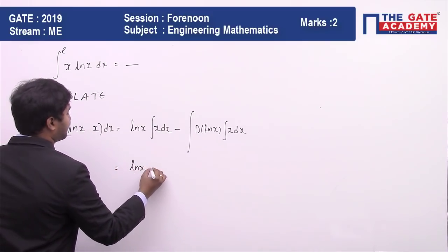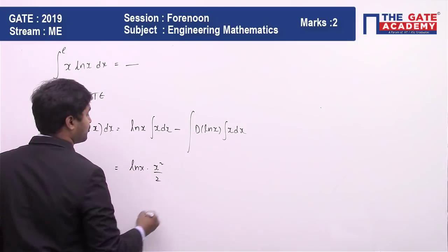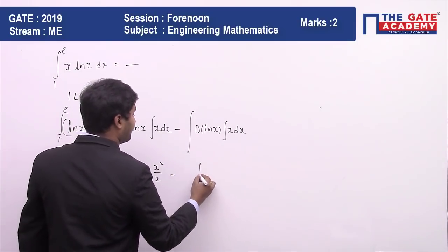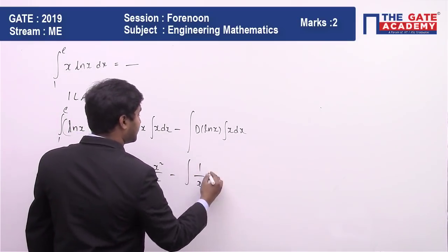This is going to be equal to ln(x) multiplied by x²/2, minus the derivative of ln(x) which is 1/x, with the integral, so here it is going to be x²/2 dx.